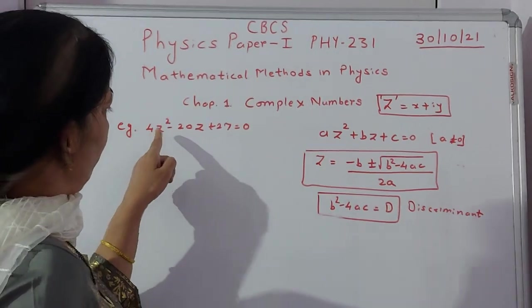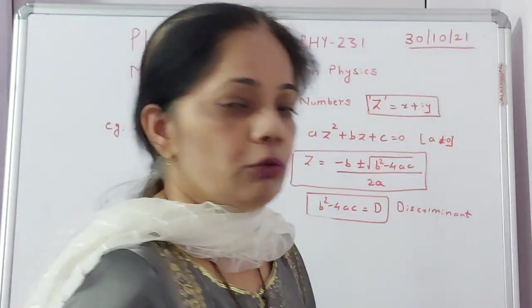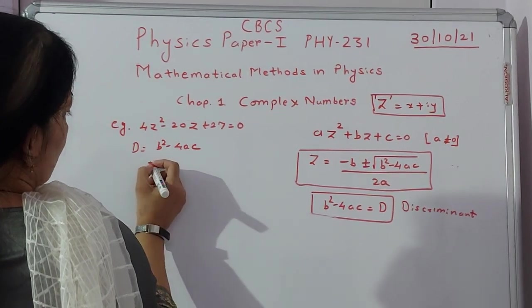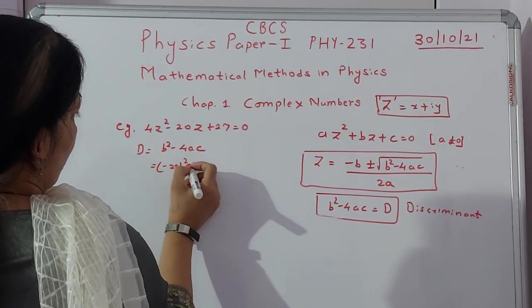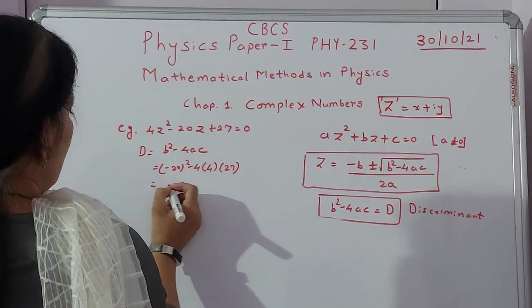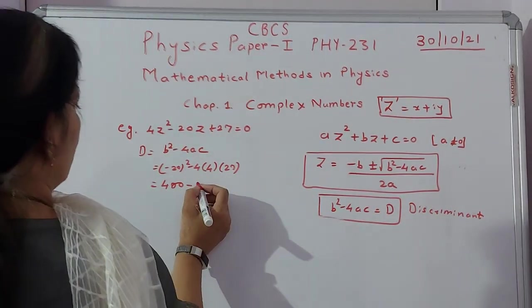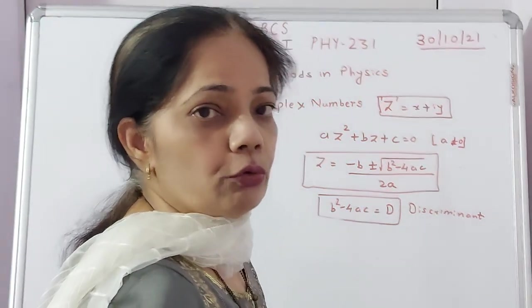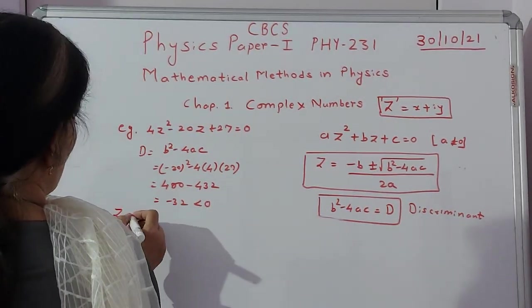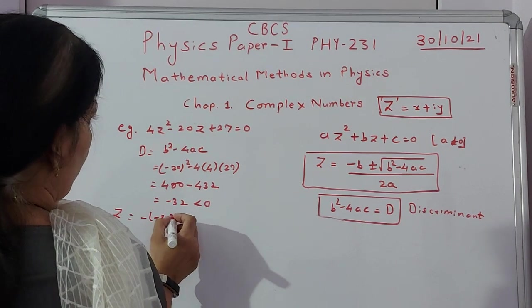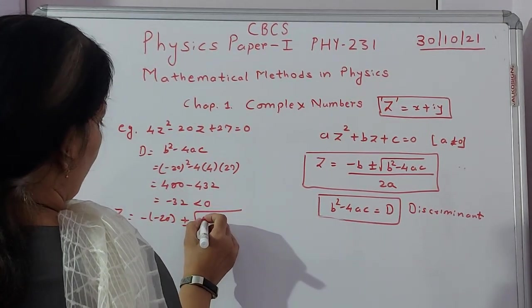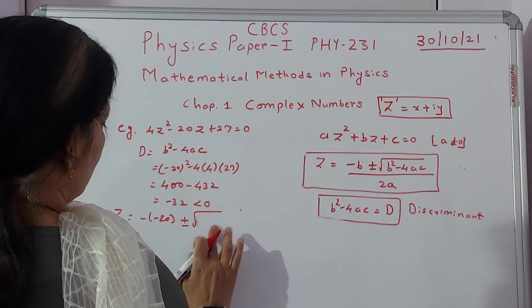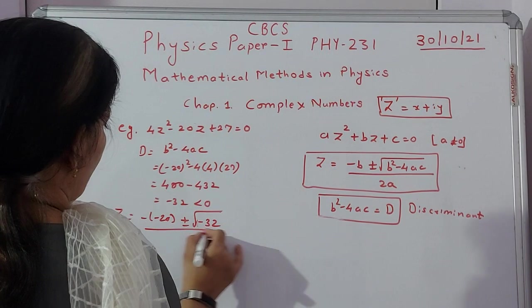Now for such example where you have 4Z² - 20Z + 27 = 0. So in this case, same logic we will apply. First find out D. So you say D = B² - 4AC will give you (-20)² - 4 × 4 × 27. That will turn out to be 400 - 432. So you say D is negative. So in such case you have to solve the problems in such a way which is Z = -B. So how much is this? -20 plus or minus, directly we will put that back. So I will write over here -32 divided by 2A. So A should be 8.